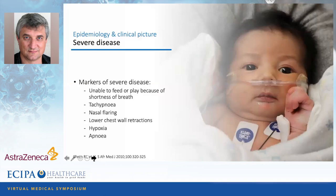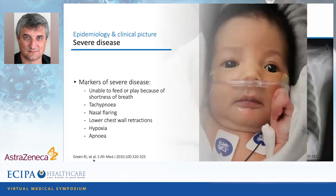Severe disease is something we must look for. Warning signs indicating more severe disease include: the baby unable to feed or play because of shortness of breath, the tachypneic baby — we need to count breathing over one minute. Look out for nasal flaring, the Hoover sign and chest wall retractions, and hypoxia. In the young baby, especially in the neonatal period, apnea may be the only presentation. A mother presenting with a young baby in RSV season reporting episodes of apnea should be taken seriously — it could be an indication of severity.